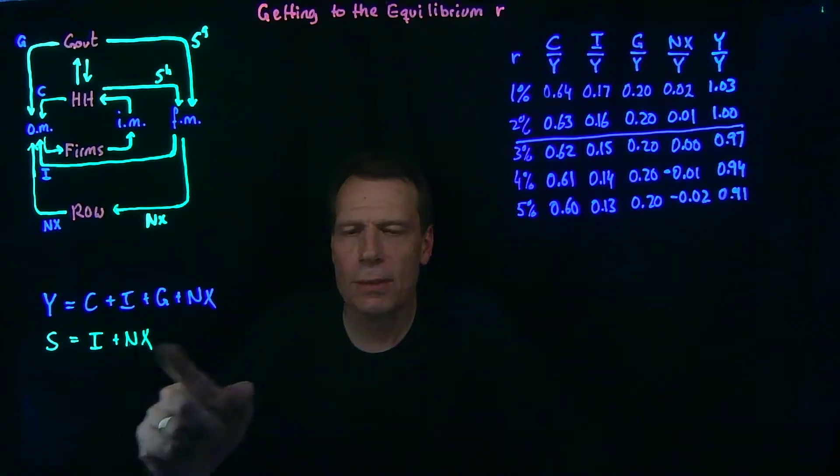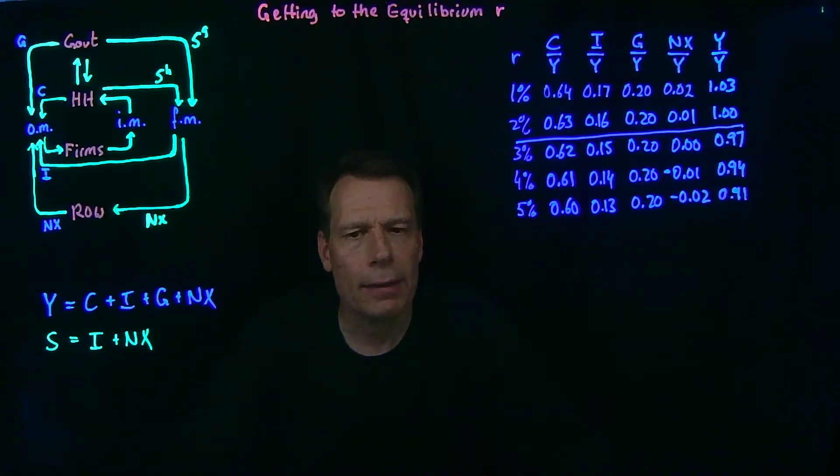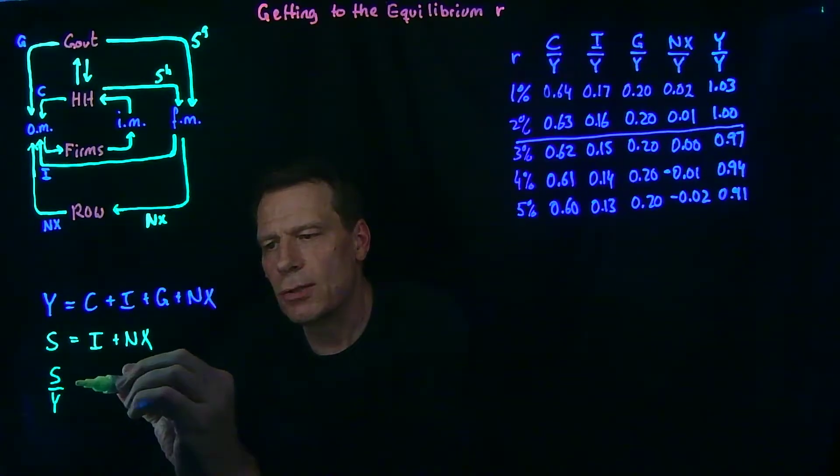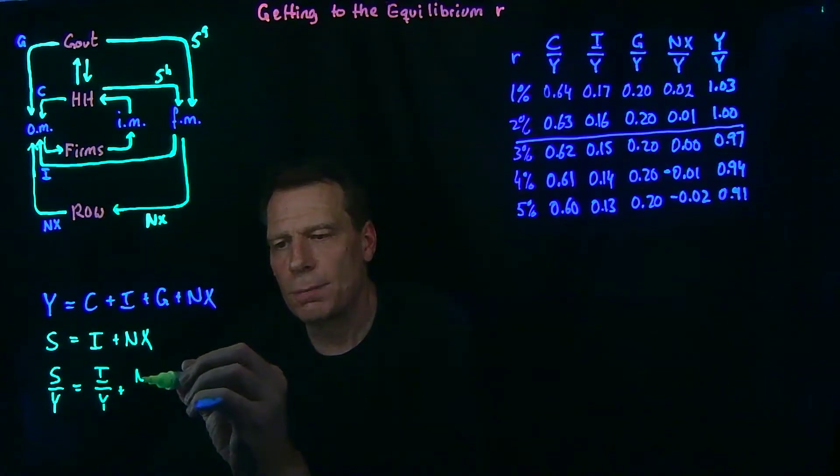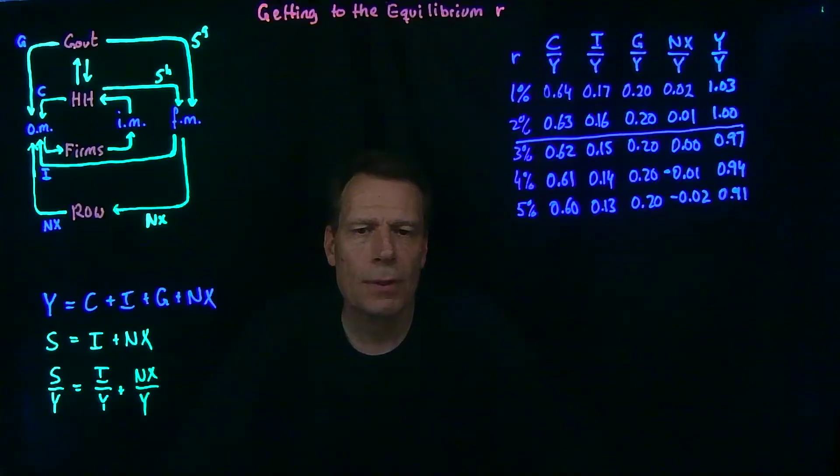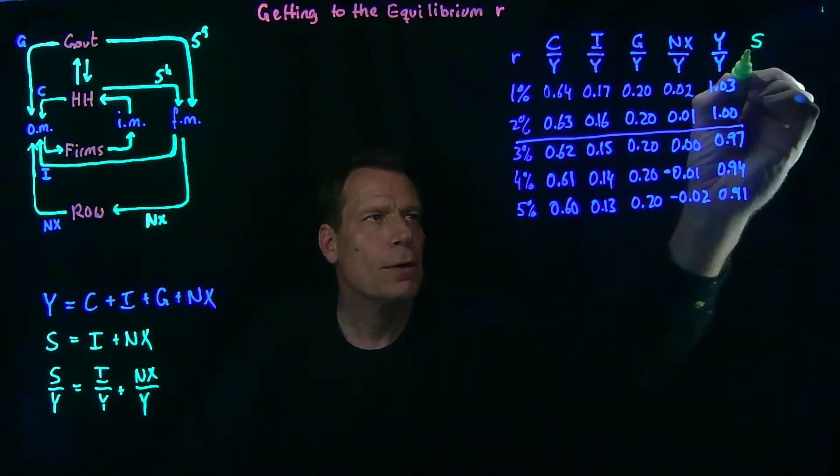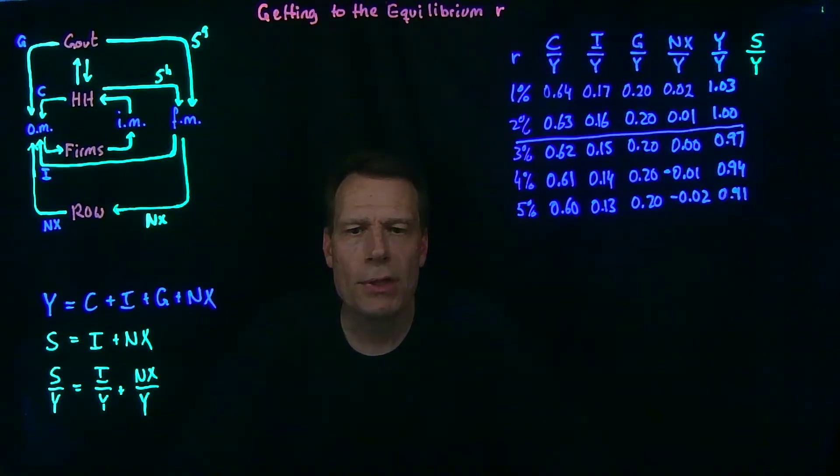We can now do to this equation exactly what we did to the previous one, divided by y. And we get that the savings share of GDP has to be equal to the investment share of GDP plus the net export share of GDP in equilibrium. So now we want to create a new column in the table, the savings share of GDP. How can we use the numbers that are already in the table to come up with that column?